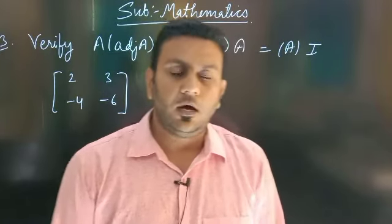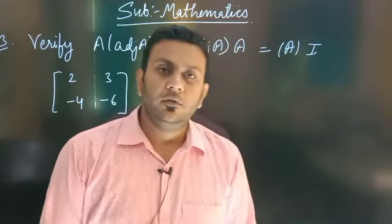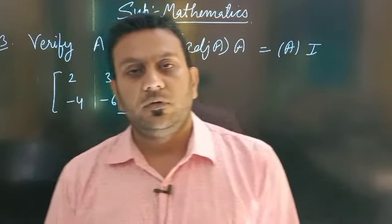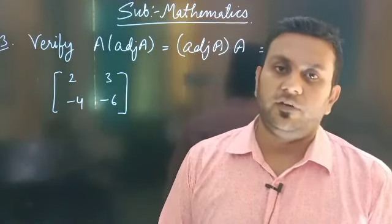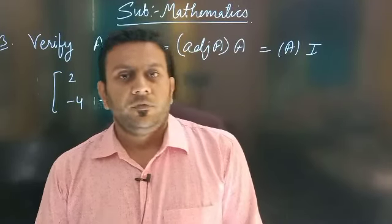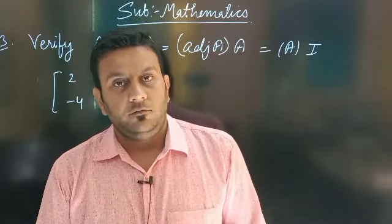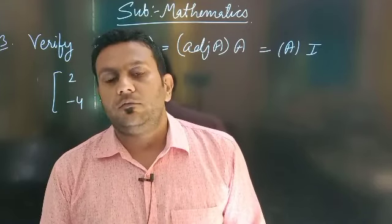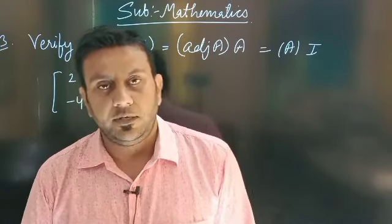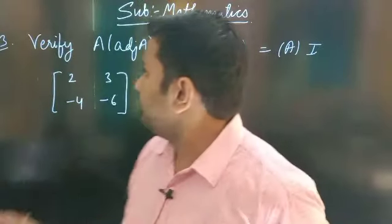Hello DA students, how are you? I think all of you are good. So let's continue with question number 3 of exercise 4.5. Yesterday, I taught you about the properties of adjoint A — what is adjoint A and how we can find out the value of adjoint A. So carry on with question number 3.